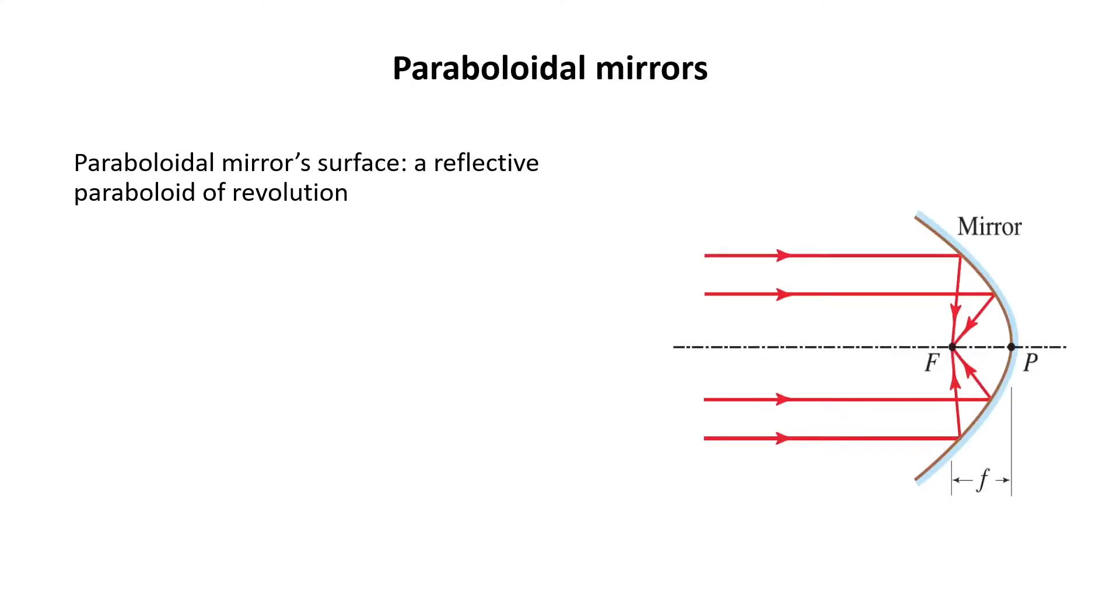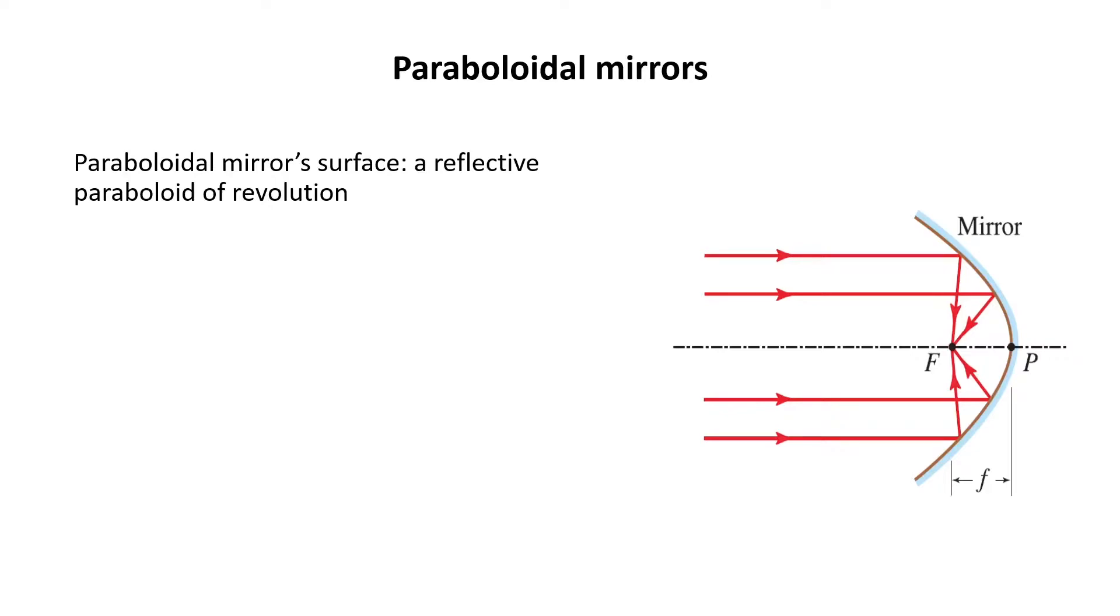Here we see the side view of a paraboloidal mirror and the dashed line is the optical axis. All rays parallel to the axis, no matter close to or far from the axis, are focused to a single point that we call the focus or the focal point.